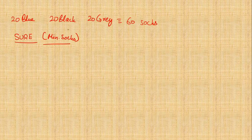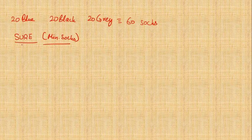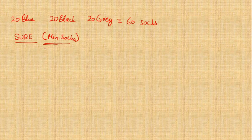Both terms — 'minimum' and 'sure' — are very important. If you don't need to be sure, the answer could be two, since the first two socks drawn might both be blue or both black. But you're not sure about it. If it wasn't about the minimum number, the answer would be 60. That is why both parts of the question make it a unique type.